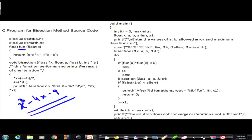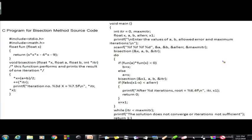This function is called by reference — I pass the address of x, and float *x means x is a variable whose address is passed. So *x gives the content. In the main function I pass the address of x. The midpoint is computed and the iteration is incremented — iteration is also called by reference, and float a and float b are the two interval points passed in.